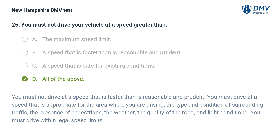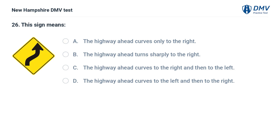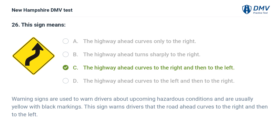This sign means: A) the highway ahead curves only to the right, B) the highway ahead turns sharply to the right, C) the highway ahead curves to the right and then to the left. Warning signs are used to warn drivers about upcoming hazardous conditions and are usually yellow with black markings. This sign warns drivers that the road ahead curves to the right and then to the left.